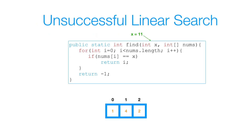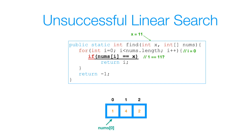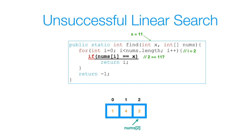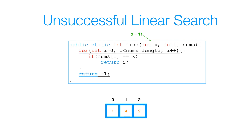Now let's see what an unsuccessful linear search looks like. We have the same method find with the same parameters x and nums. We proceed with the for loop: i equals 0, nums of 0 is 1, not 11. i equals 1, nums of 1 is 4, not 11. i equals 2, nums of 2 is 2, not 11. At this point i is equal to 3, which equals nums.length, so we've broken the condition that i is less than nums.length. We return negative 1. That's how we perform an unsuccessful linear search.